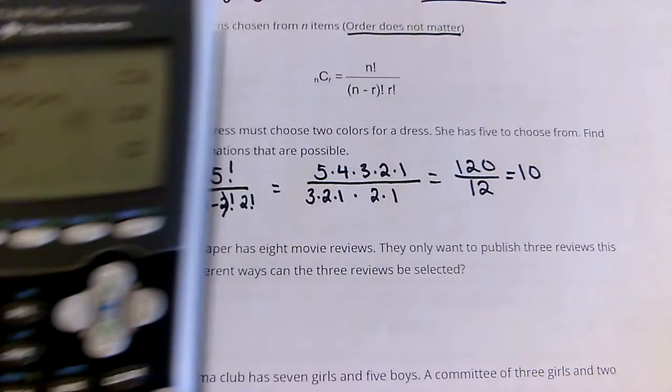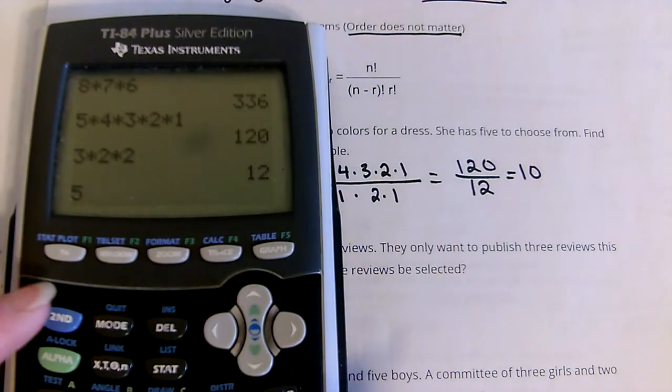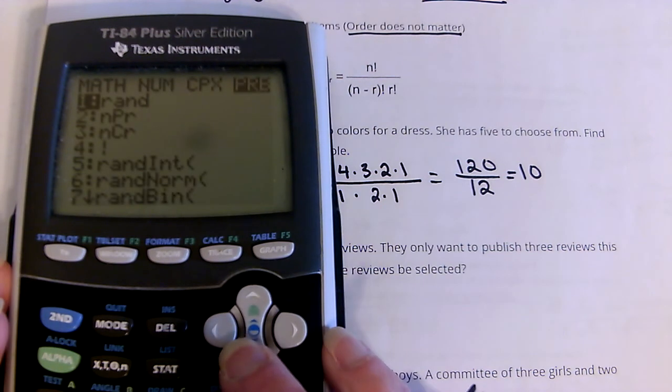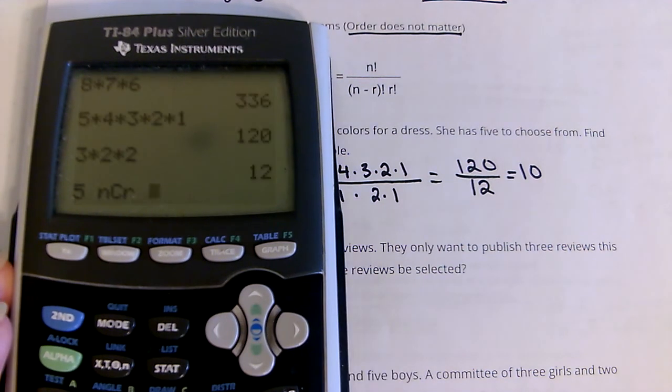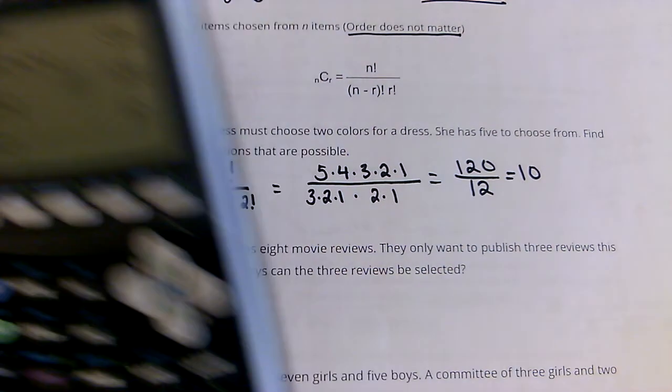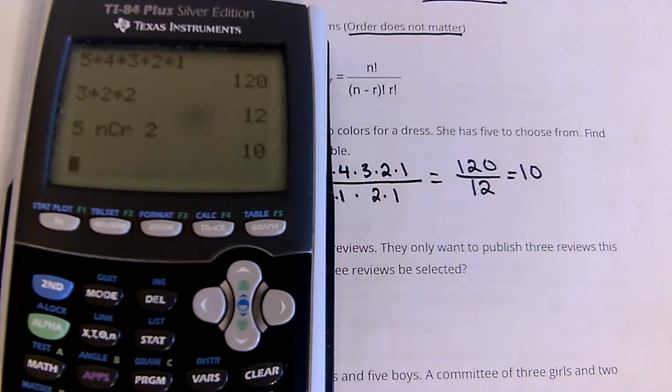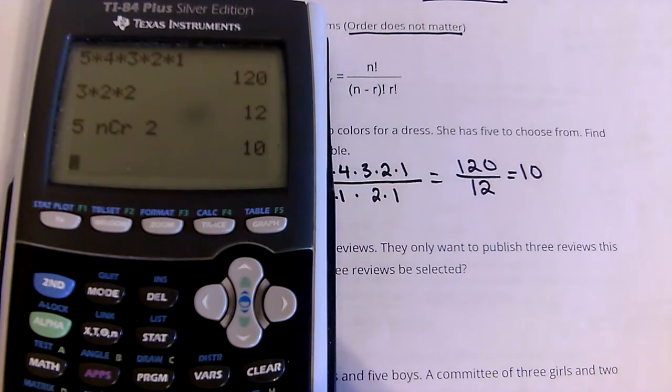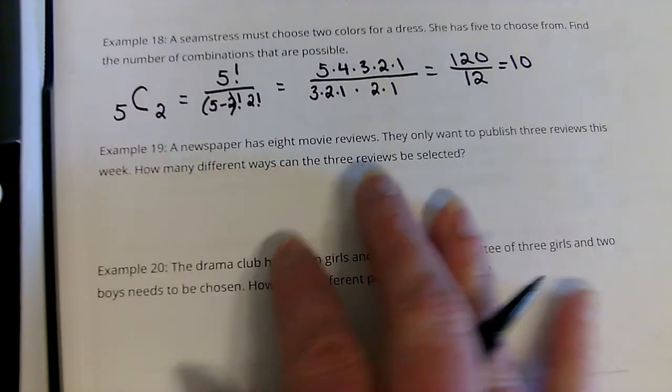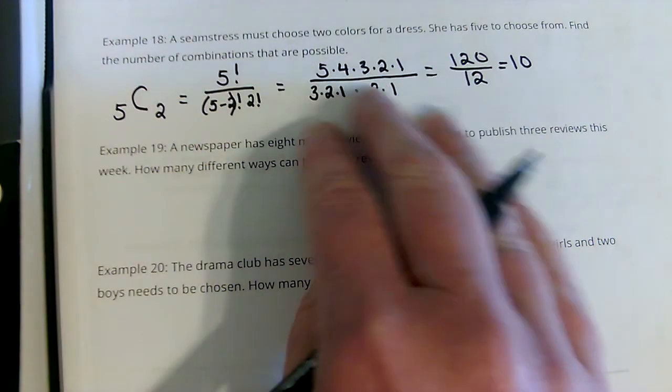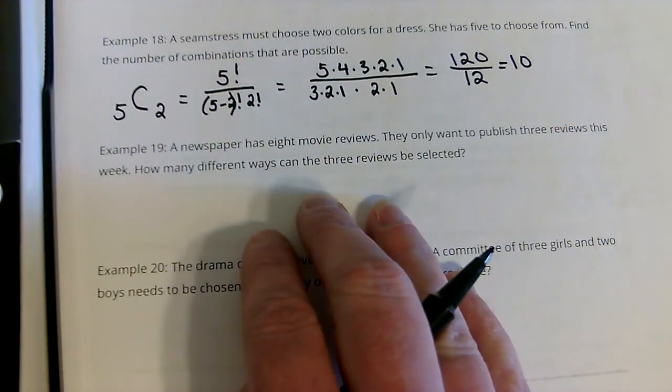Let me show you how I could do this one in the calculator. 5 choose. We're choosing 2. Gives me 10. If you had a lot more to choose from, this formula would get a little bit hairy.